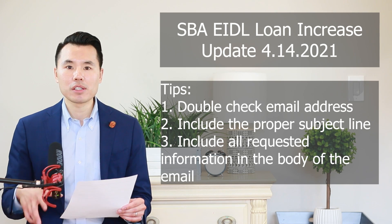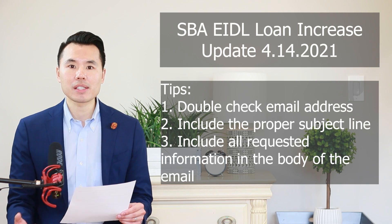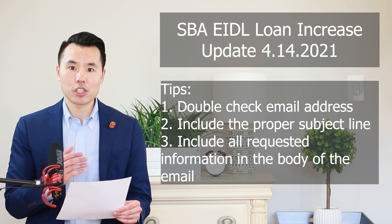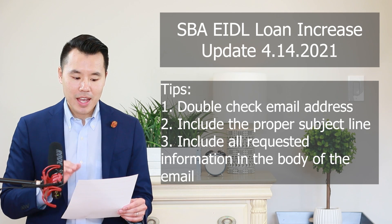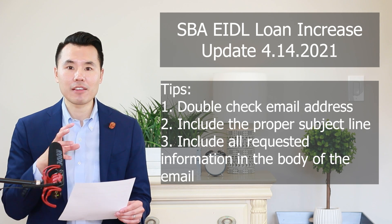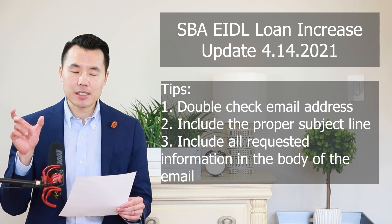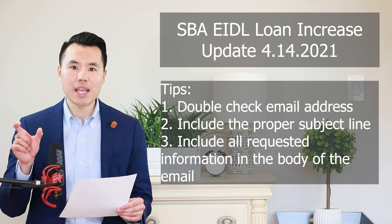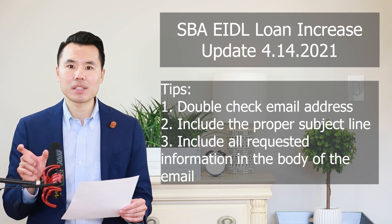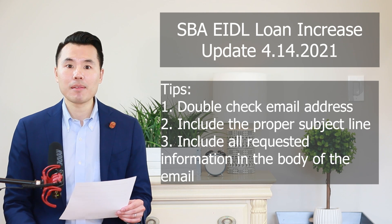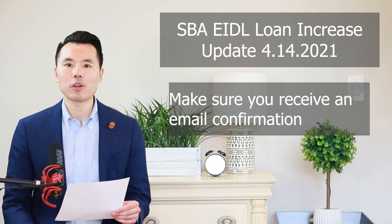Once again, it's essential if you did not receive a confirmation email for your loan increase request initially — go back into your email box, double check, make sure that the email address you're sending to is correct, and then adjust and include any and all information they've requested. The subject line has to be a certain way. You have to include the application number, the SBA loan number, the business name, business address, phone number, and owner name as well. Make sure you include all that information on the second attempt if you did not receive that automatic email response.